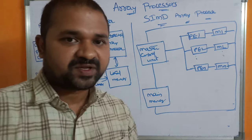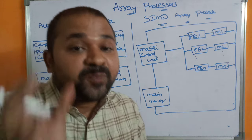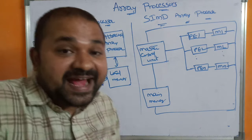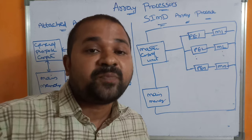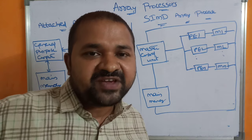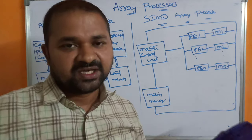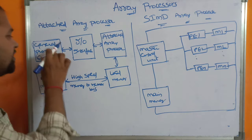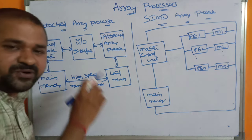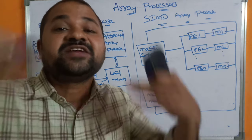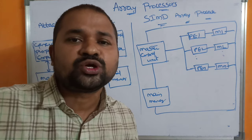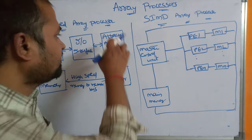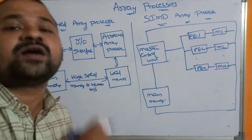Let's see about the attached array processor. Here, an additional array processor is attached to the computer in order to improve the performance of the system. Let us assume that we are executing a vast number of instructions. In that case, it is not possible to execute all those instructions with just our computer — it may take days and weeks. So, in order to improve the performance of the system, an attached array processor is attached to the computer.